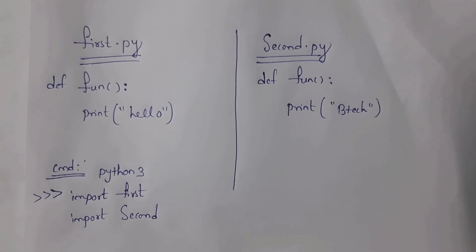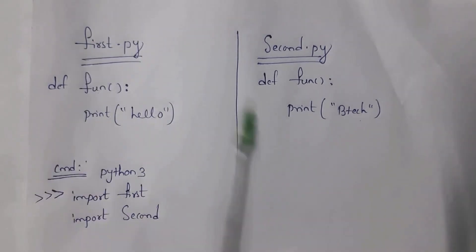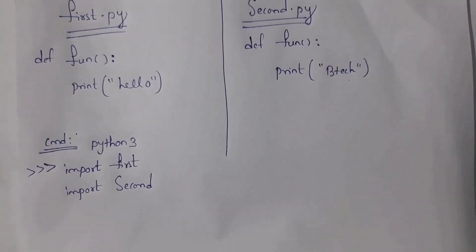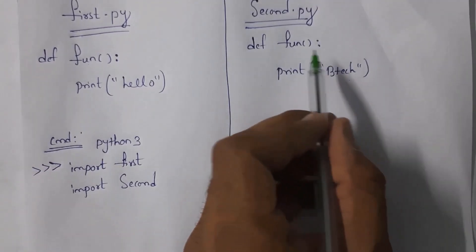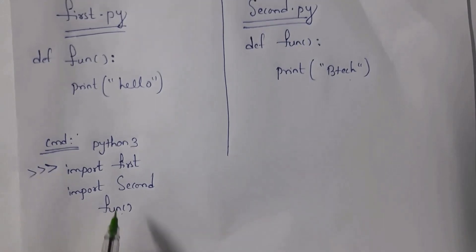Inside the command prompt, I run Python 3 to open the Python interpreter. I then import both modules: 'import first' imports the first module, and 'import second' imports the second module. Now, if I want to print 'btec' which is present in second.py inside function fun, I need to call that function.